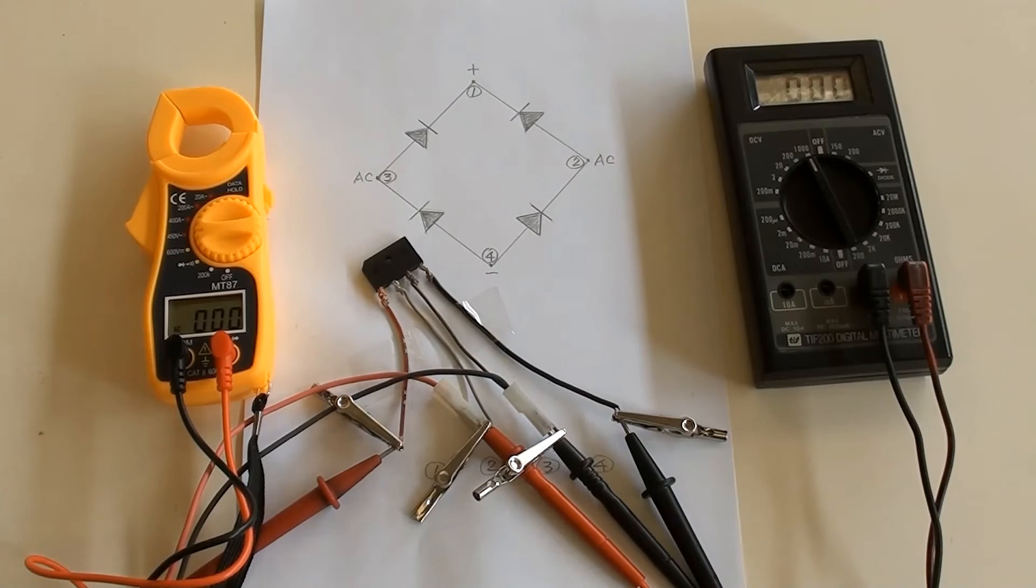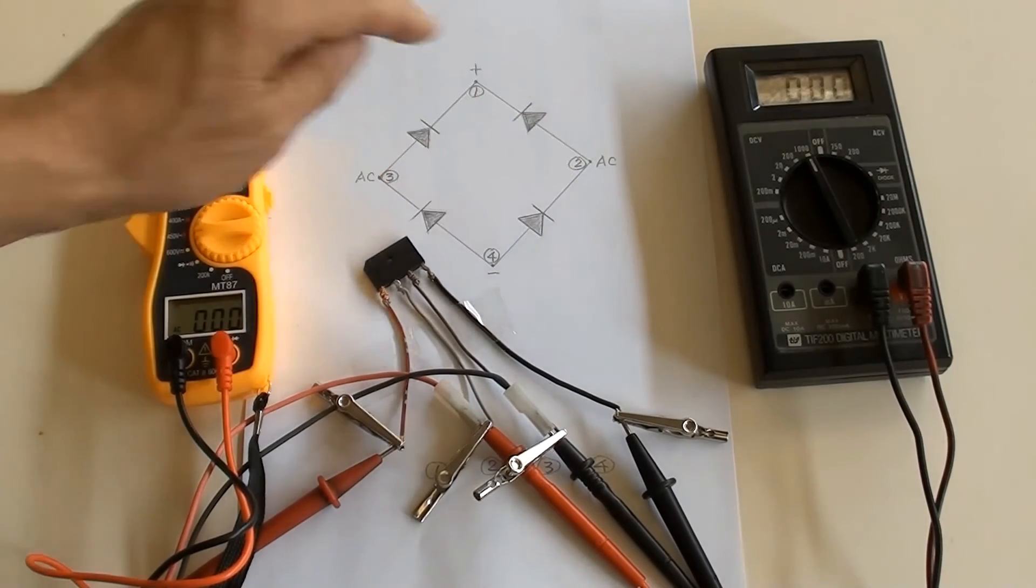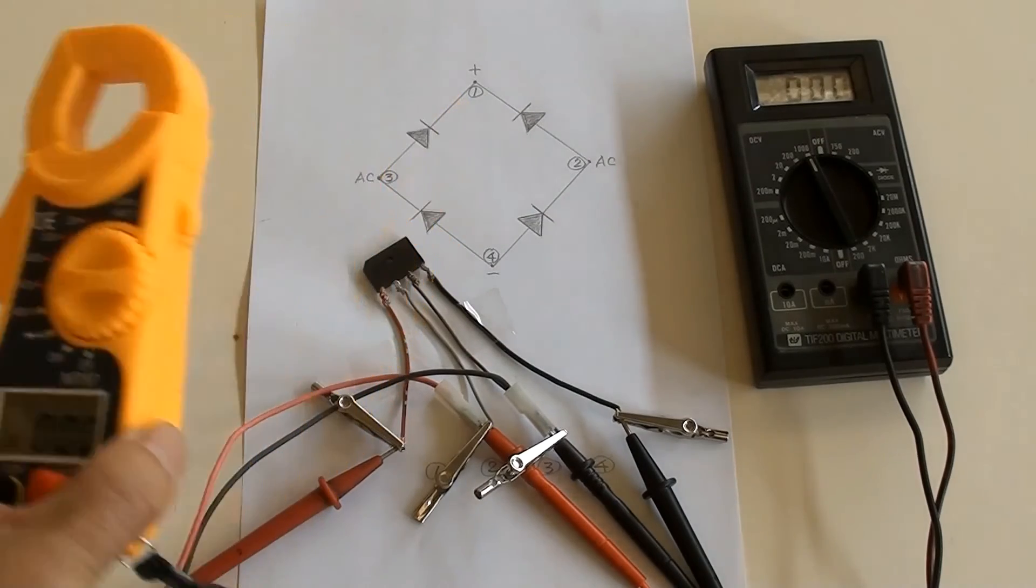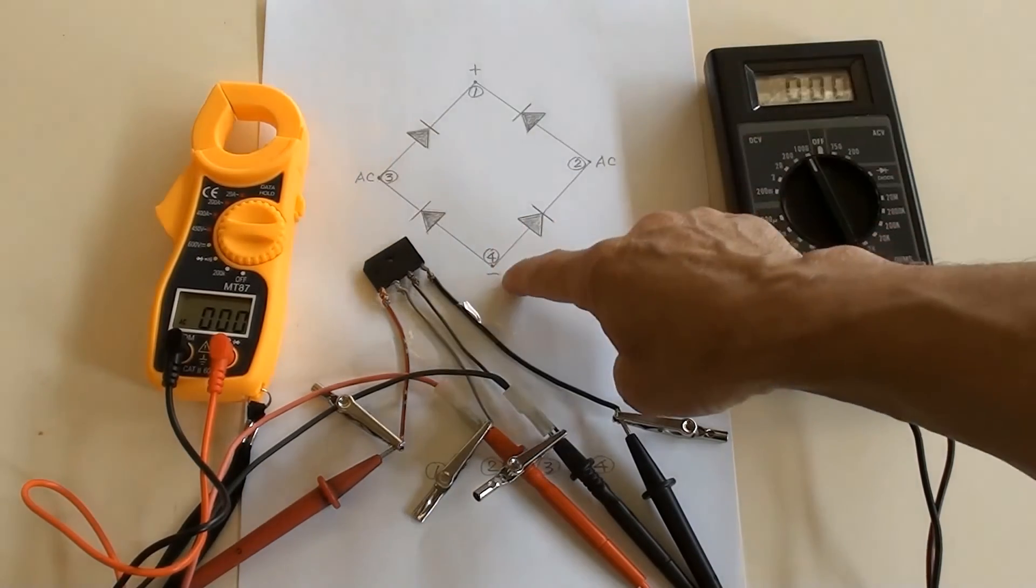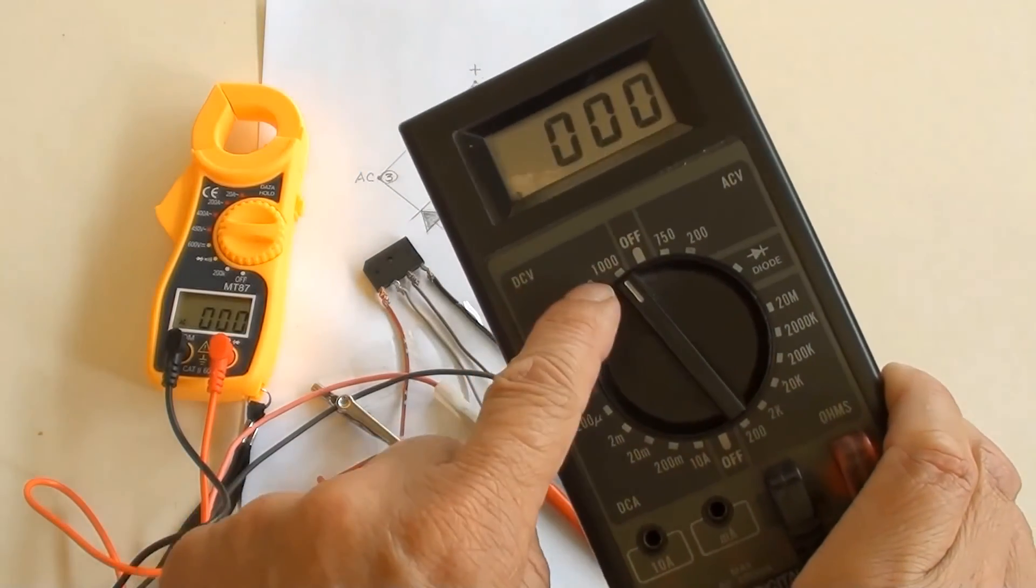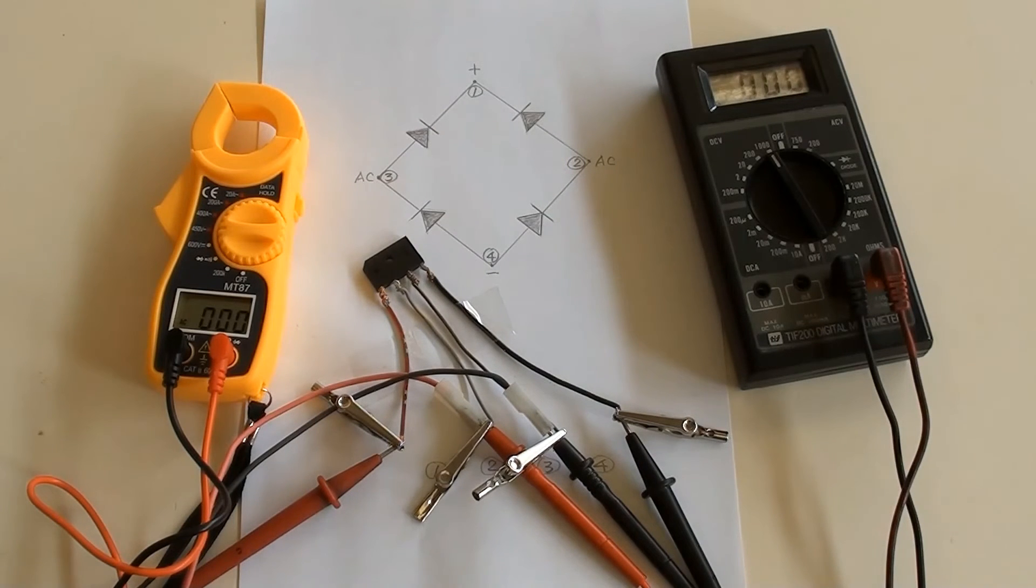Rectifier live testing. Terminal 3 and 2 have been connected to clamp meter on the left, AC 450 volt position. Terminal 1 and 4 have been connected to multimeter on the right, DC 1000 volt position. Switch live power on.